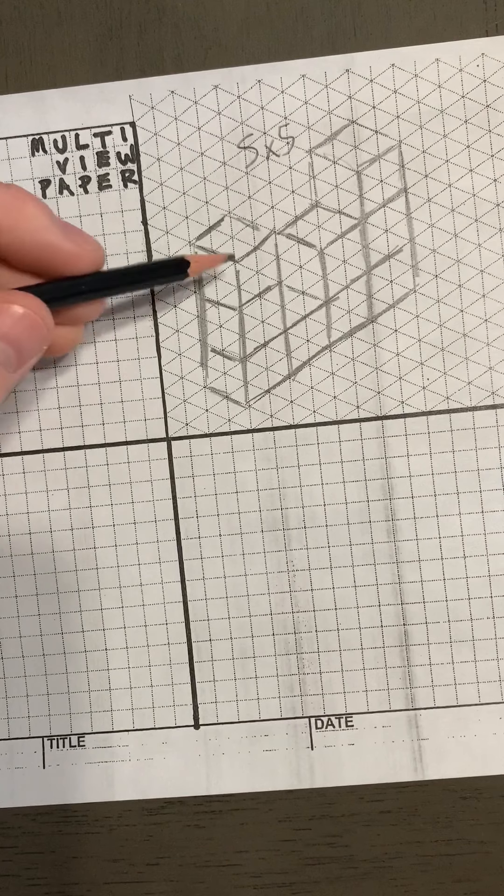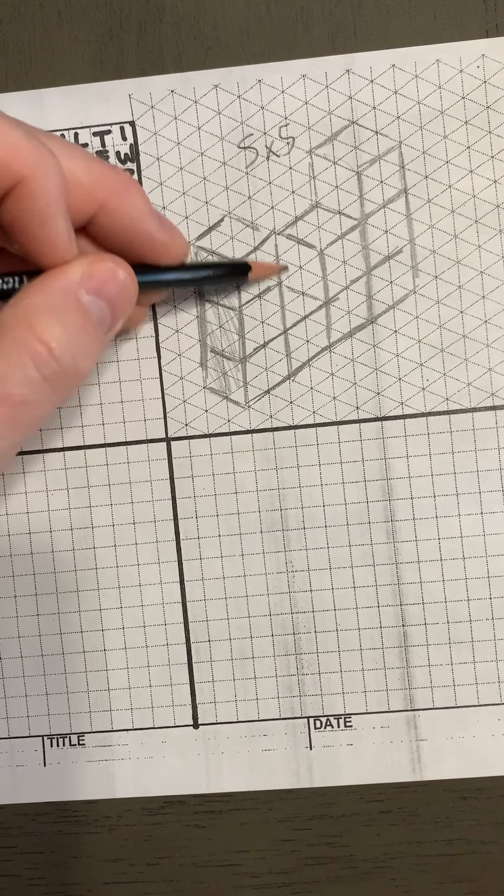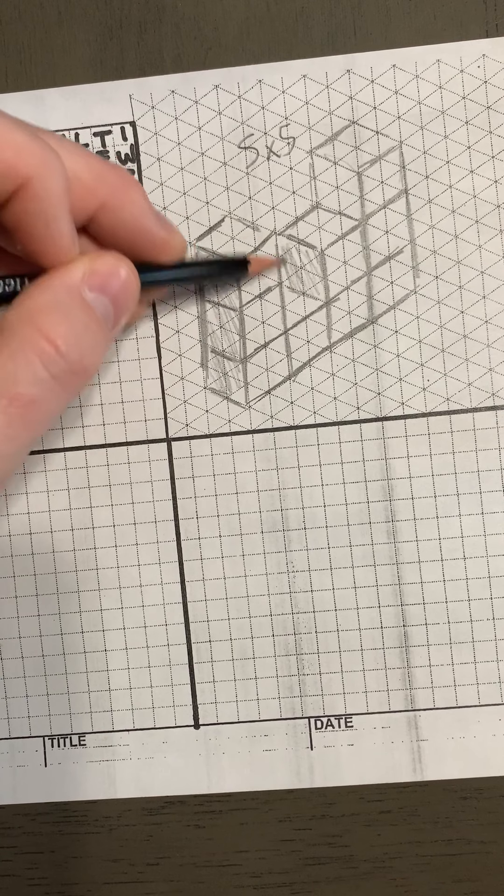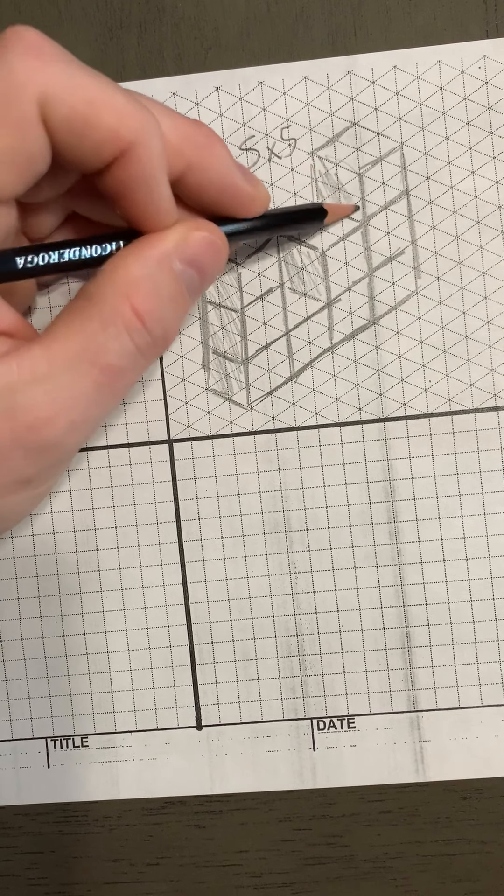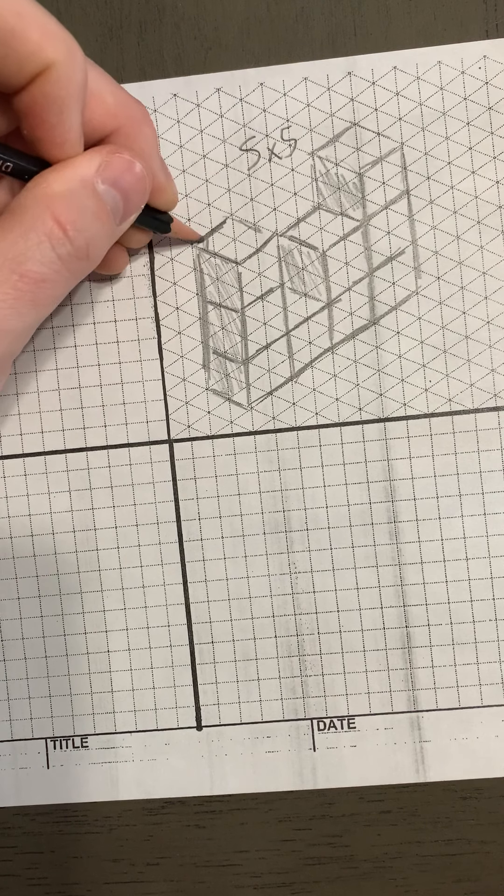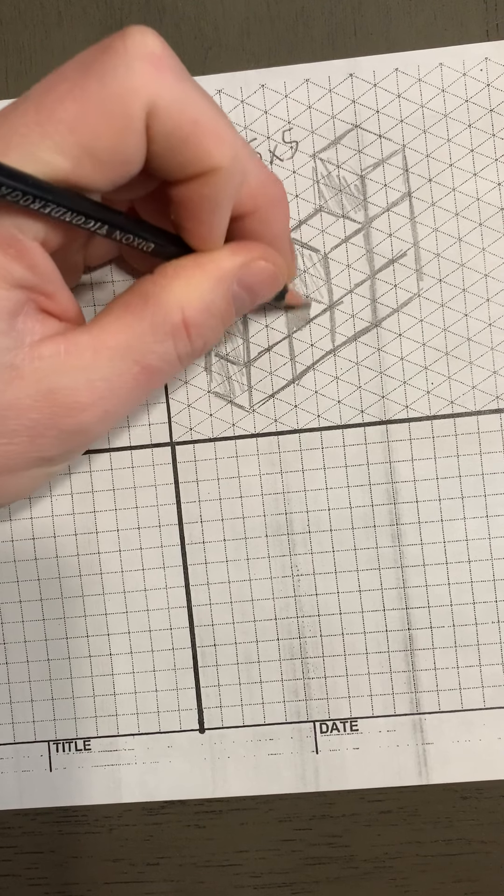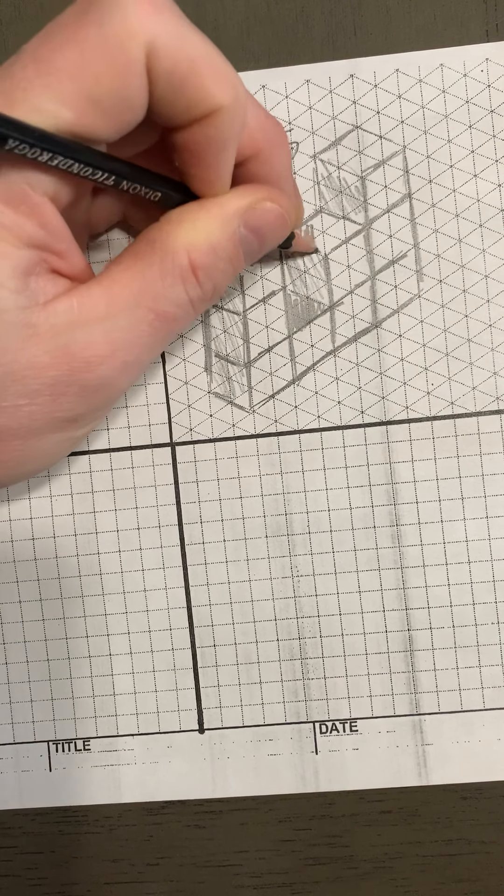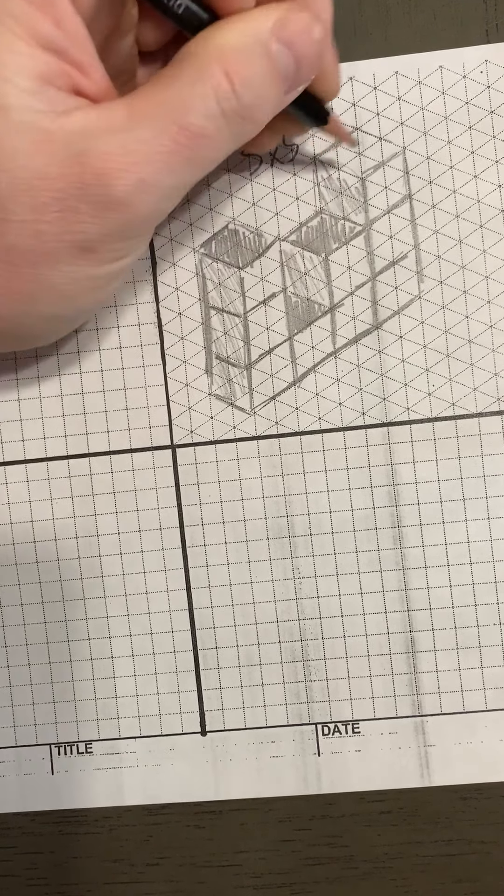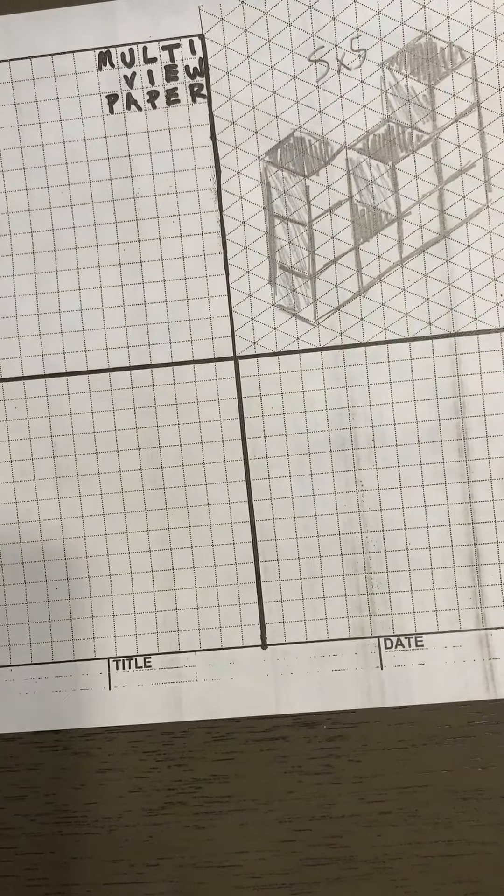So when we shade, we're going to shade the front medium. All those face the front, and then the top I will do dark. So this is just practicing that isometric sketching and shading, and now we're ready to go. So that's what it looks like.